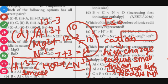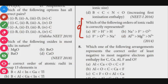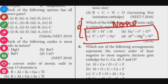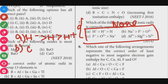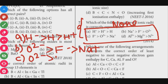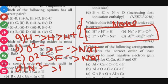So for question number 7, the answer is none of the above — because all four options present correct orders: (1) H− > H > H+; (2) O2− > F− > Na+; (3) O2− > F− > Na+; and (4) N3− > Mg2+ > Al3+ in increasing ionic size. Option D gives the correct increasing order: Al3+, Mg2+, N3−.